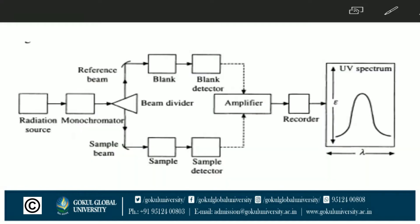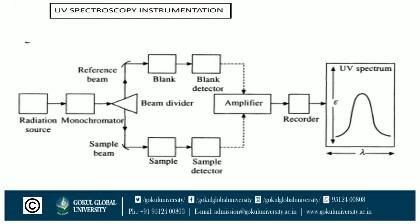Here we draw a diagram of the UV spectroscopic instrumentation. It starts from the first component, the radiation source, from which UV light radiation comes to the monochromator and is converted into a monochromatic beam.